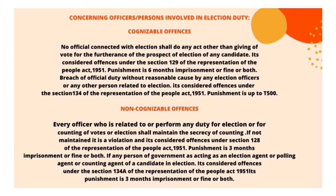Concerning officers and persons involved in election duty — cognizable offense: no official connected with the election shall do any act other than casting their own vote for the furtherance of the prospects of any candidate. This is an offense under Section 129 of the Representation of the People Act 1951, with a punishment of six months' imprisonment, a fine, or both. Breach of official duty without reasonable cause by an election officer or any person related to the election is an offense under Section 134, with a punishment of up to Rs. 500.